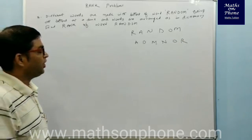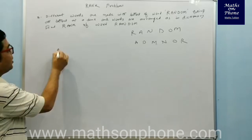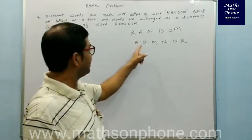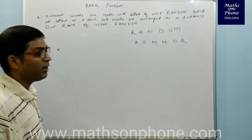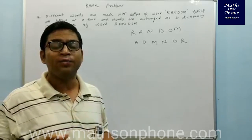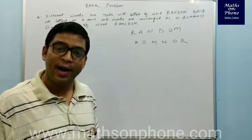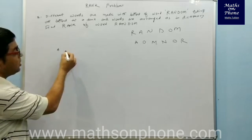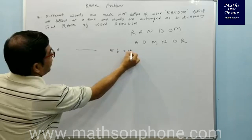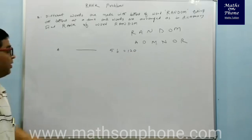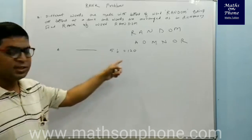The technique is: take the first letter and fix it at the first place. If you fix A at the first place, the remaining five letters can be arranged in 5! ways. All words starting with A will definitely fall before the actual word RANDOM. So the number of words starting with A is 5! = 120.